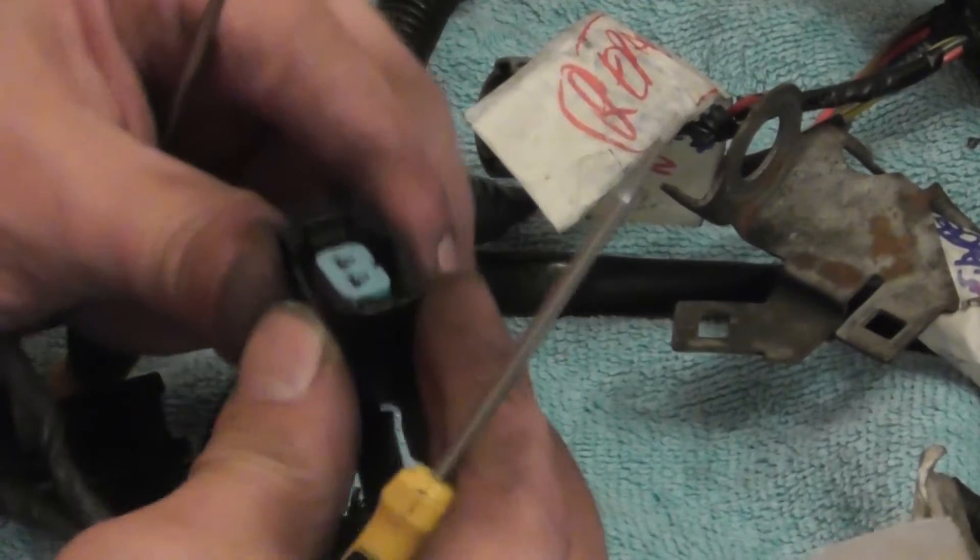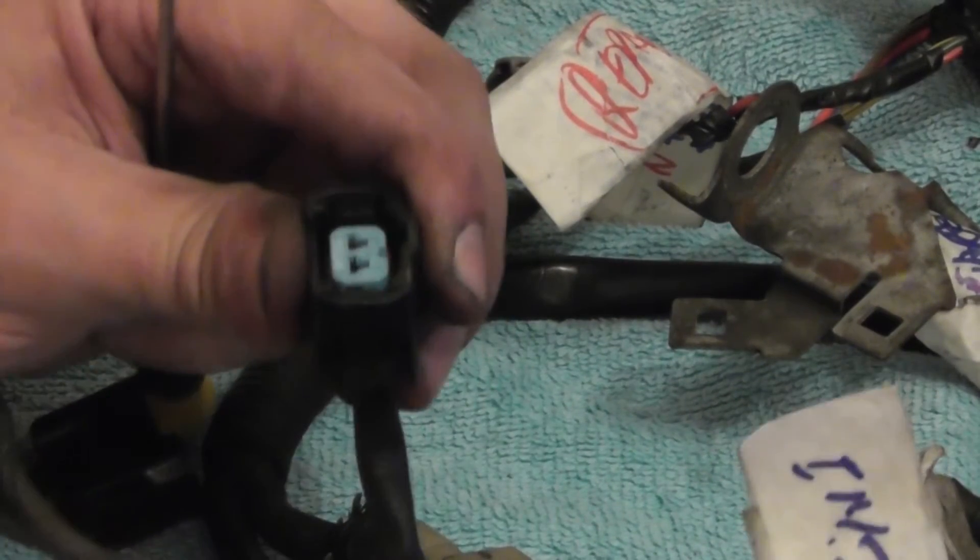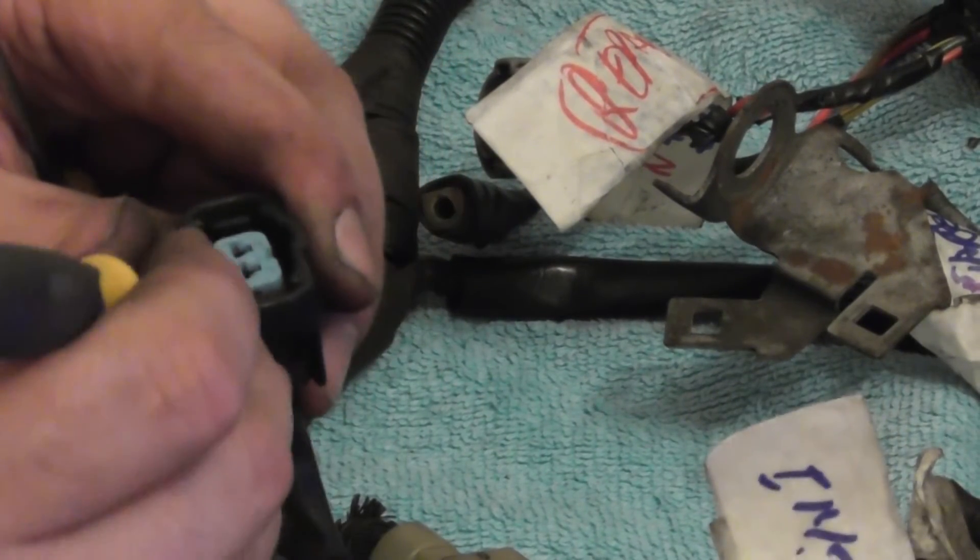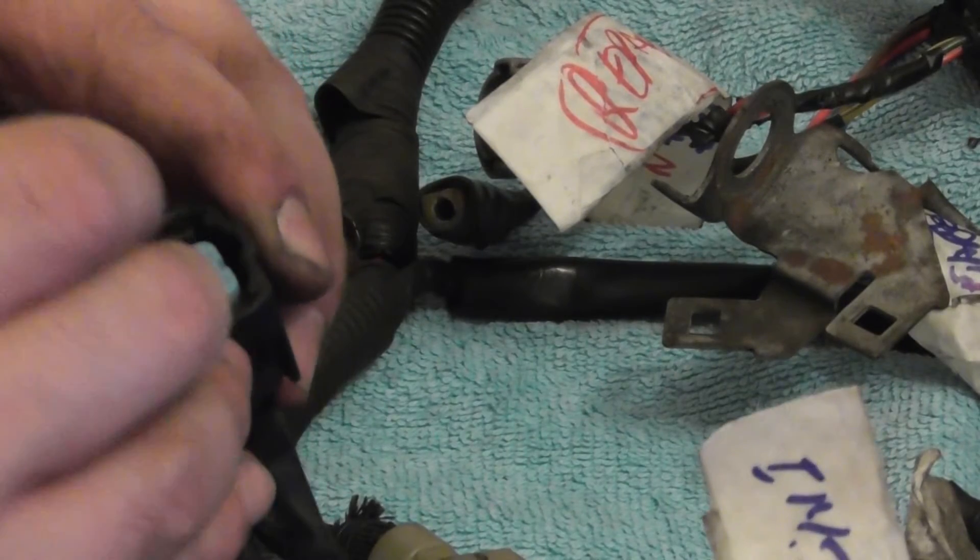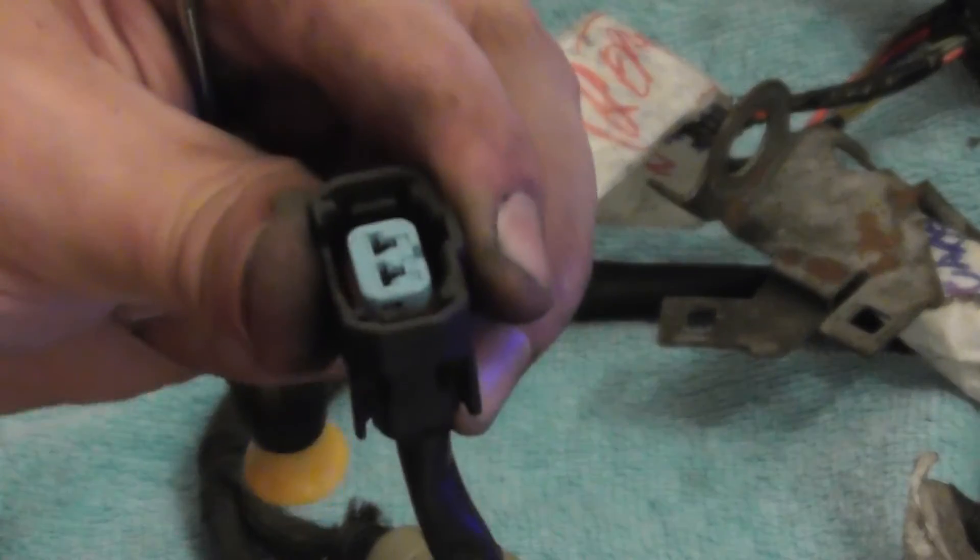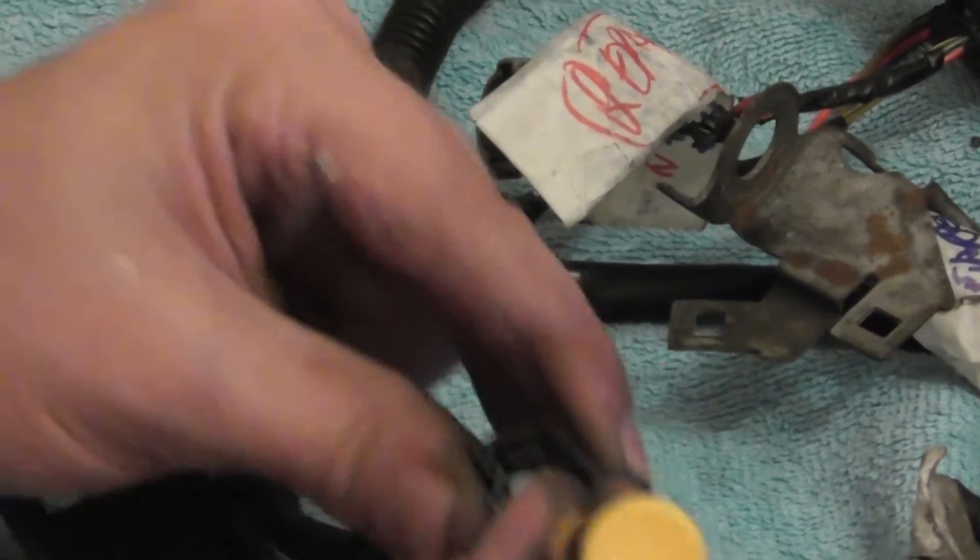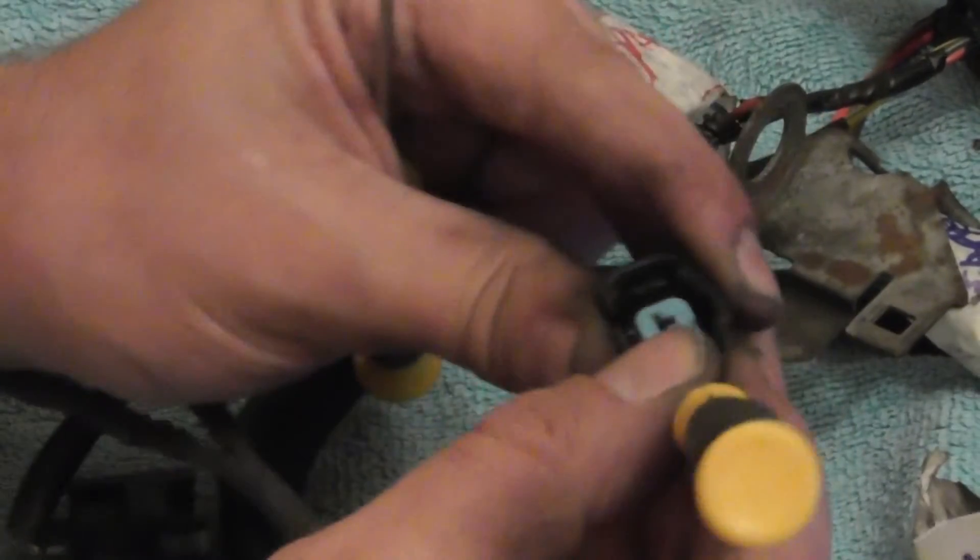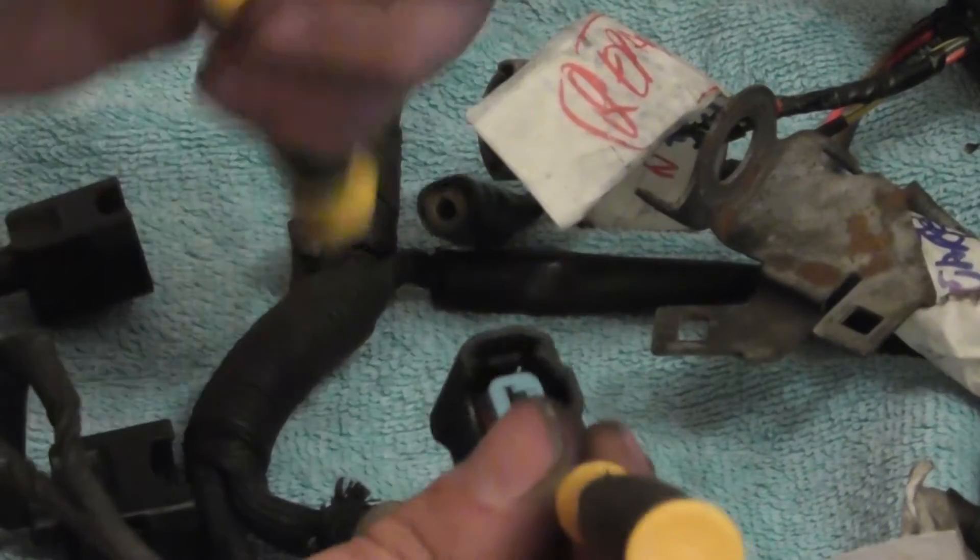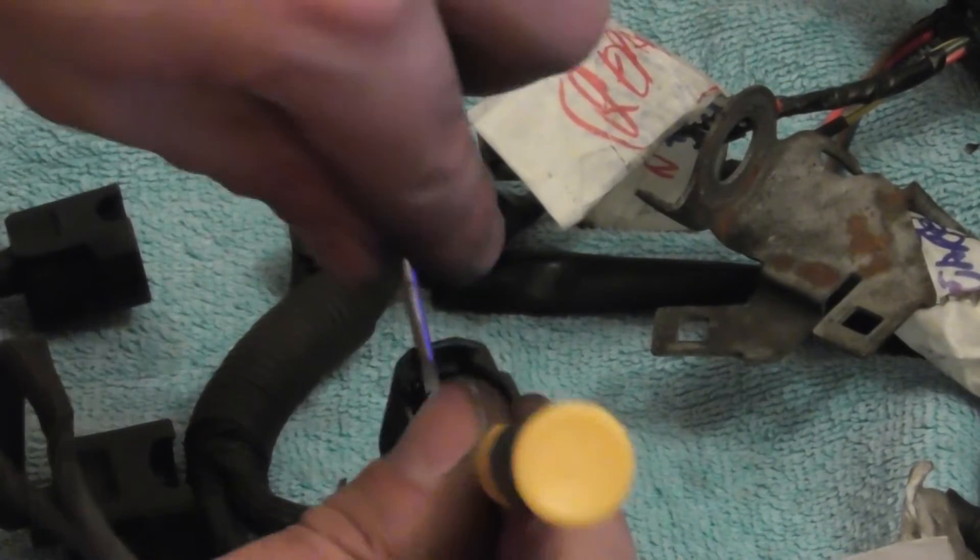Then you get your OBD2 injector clip and there's two little recesses. They're kind of difficult to see, but just down the side here. So you put one in here, down one side, and you put the other down this side.